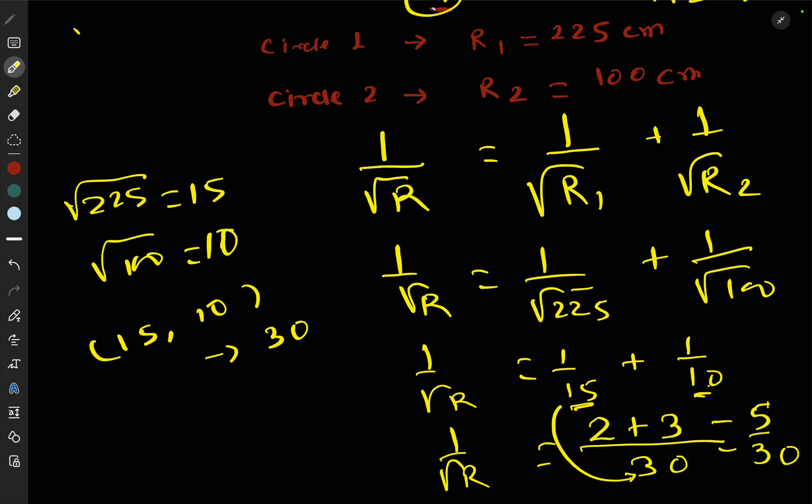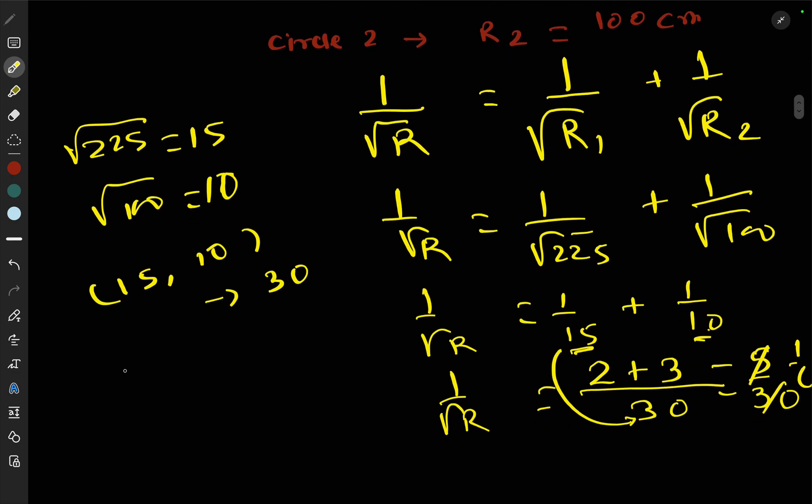So 1/√R = 1/6, which means √R = 6. Therefore R = 6² = 36. So R is 36 cm, and this is the radius of the smaller circle.